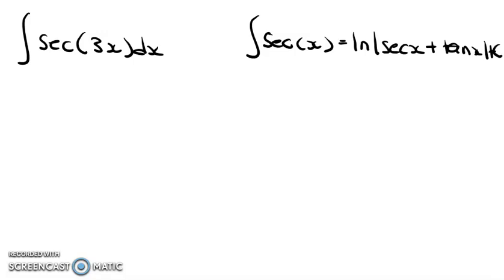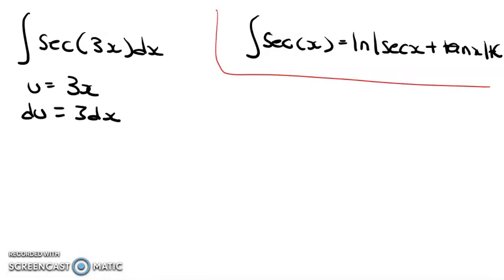So what we're going to do now that we've gotten this formula out of the way is make a u substitution. We're going to say u equals 3x, then du equals 3 dx. Isolating for dx, we say dx equals du over 3.